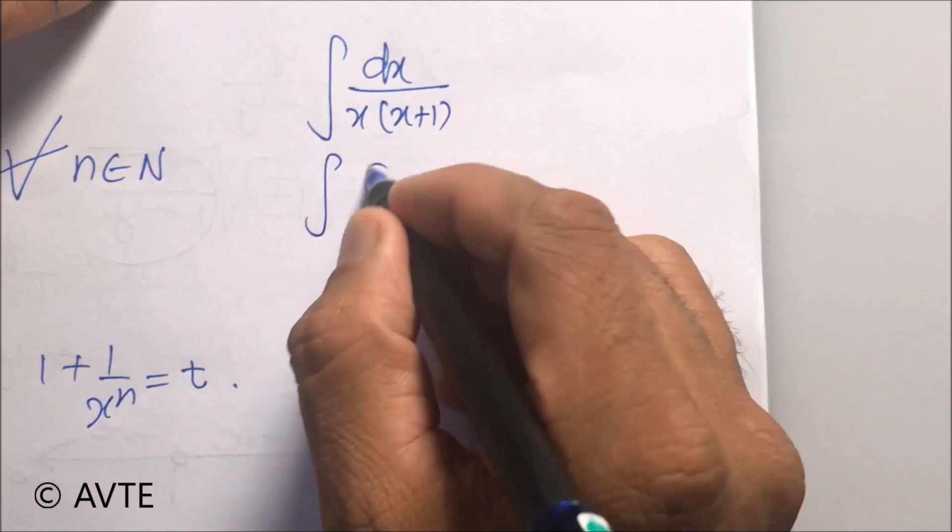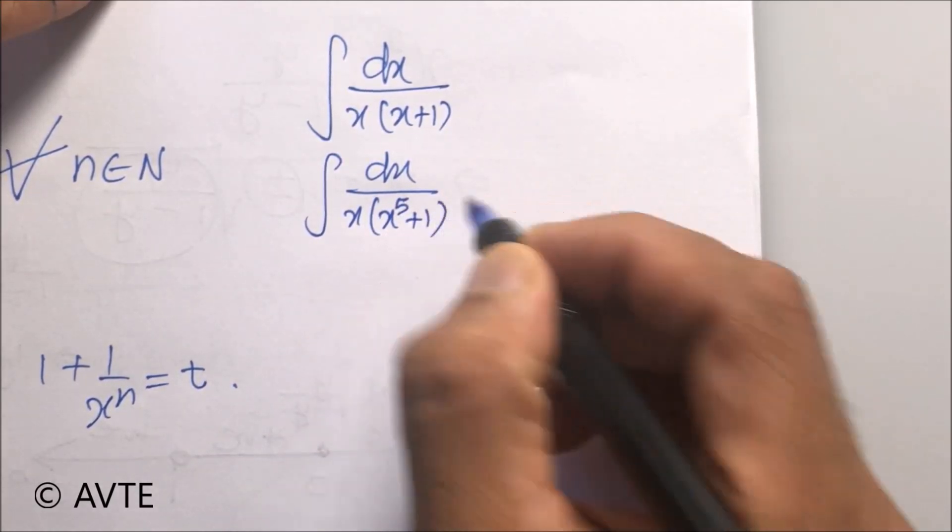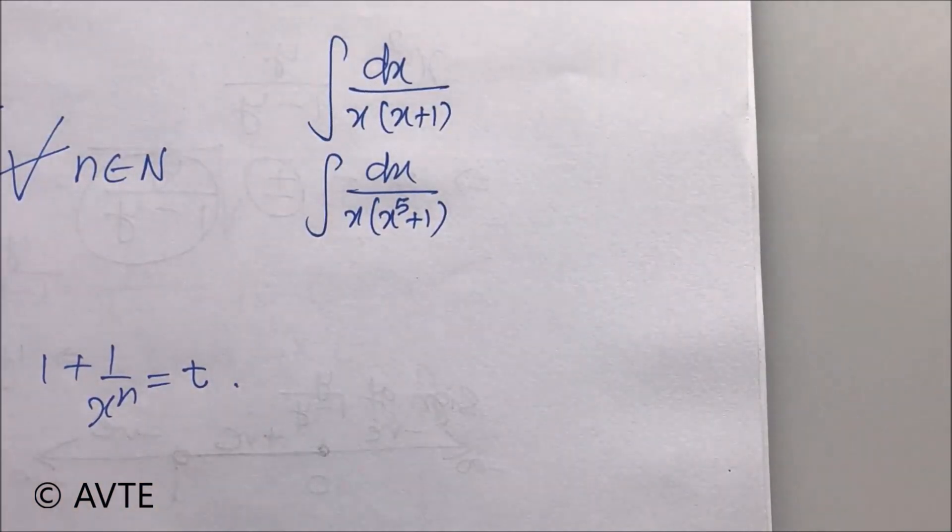So you can try various questions. You can try dx upon x times x plus 1 - you can take x common. You can try dx over x times x to the power 5 plus 1 - simply take common. In first case x and second case x to the power 5, and you'll be able to crack all these questions. Thank you very much.